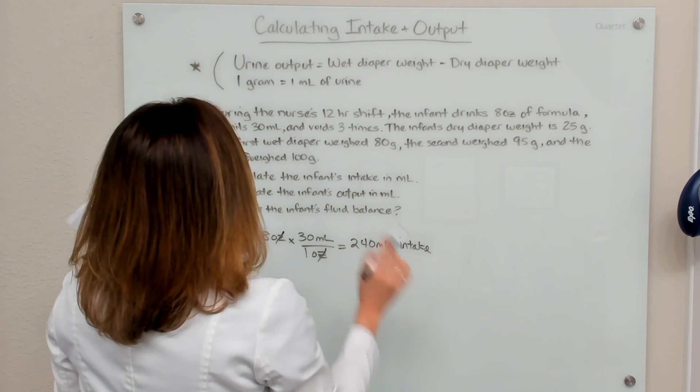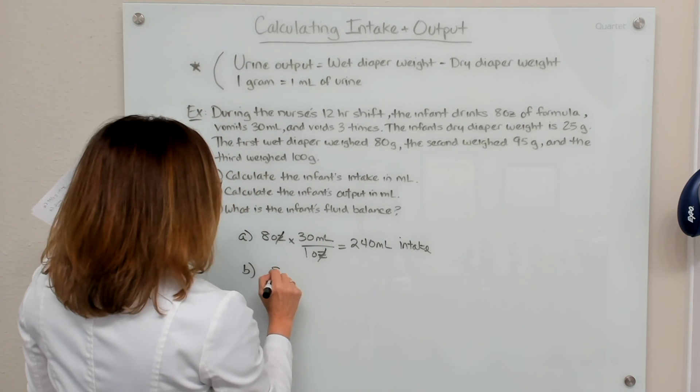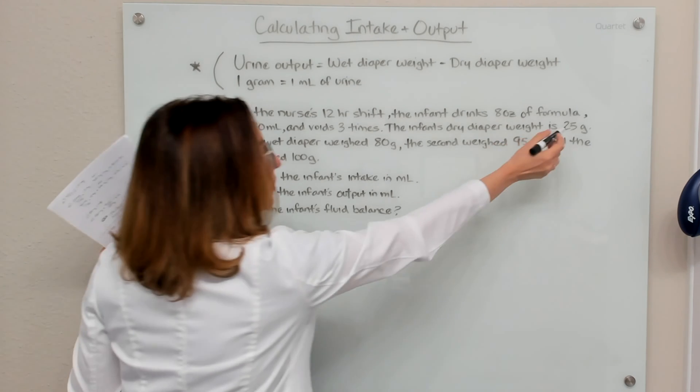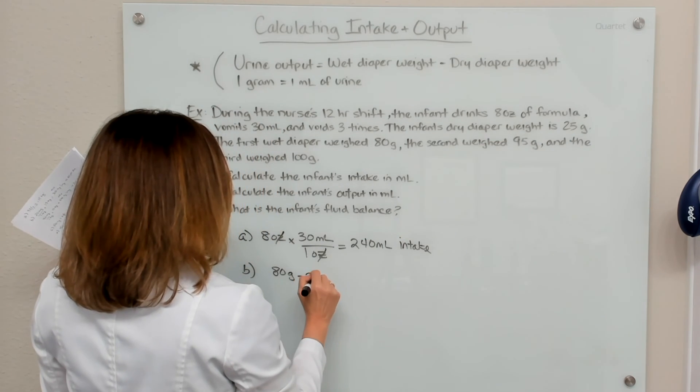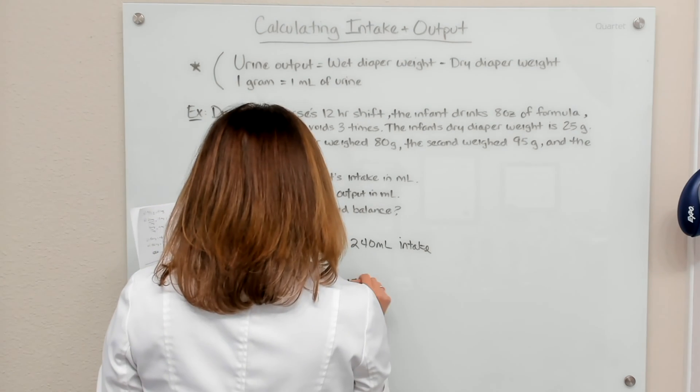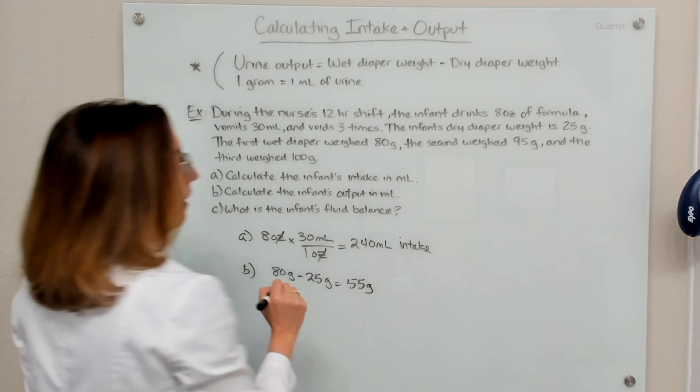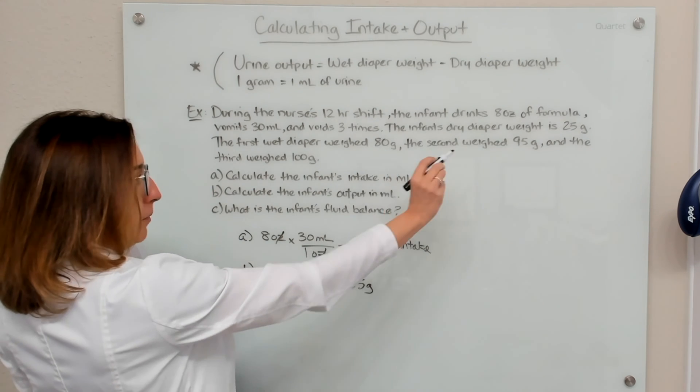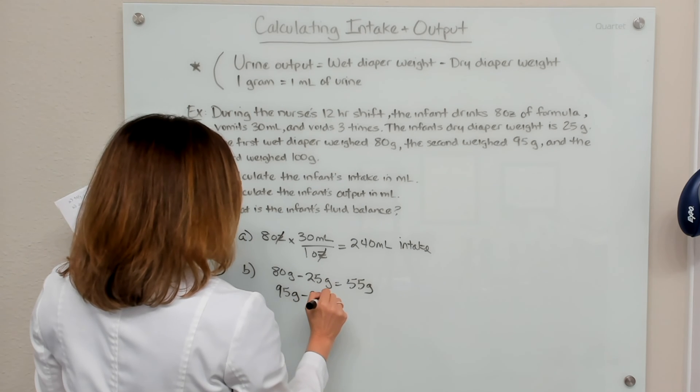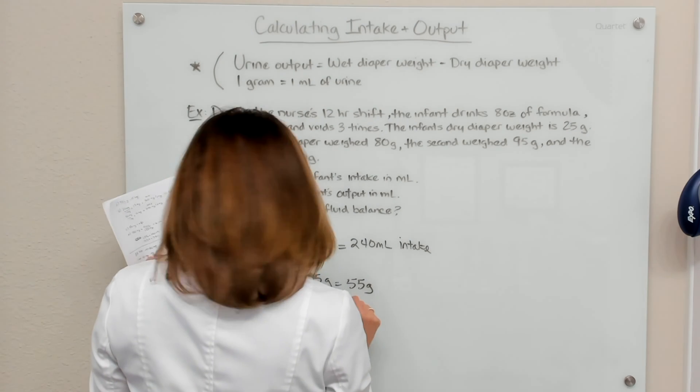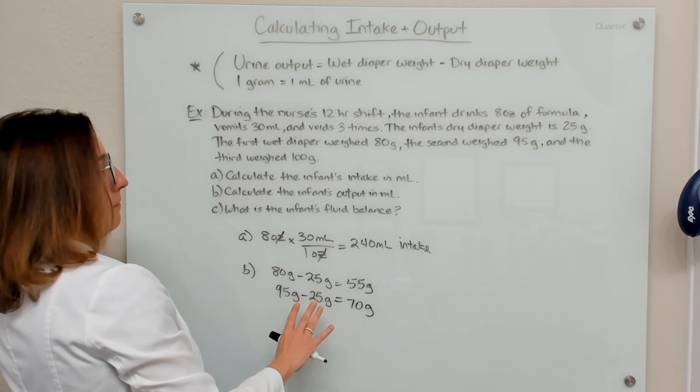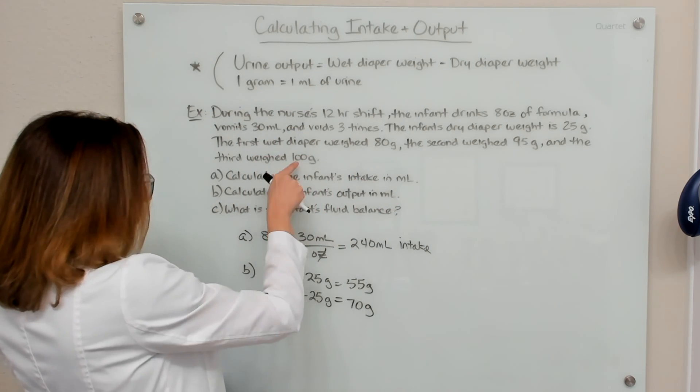Let's first work out the urine output. So our first wet diaper weighed 80 grams, and our dry diaper weight was 25 grams. So if I take this, I end up with 55 grams. Our second diaper weighed 95 grams. And if I subtract out our 25 grams, I end up with 70 grams for that second diaper.